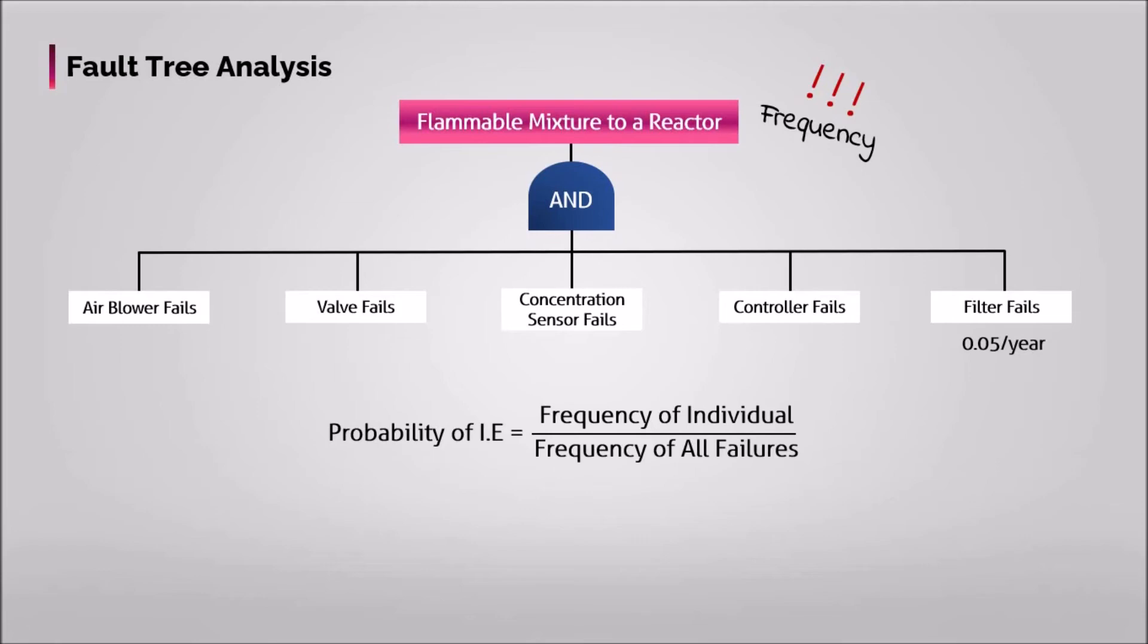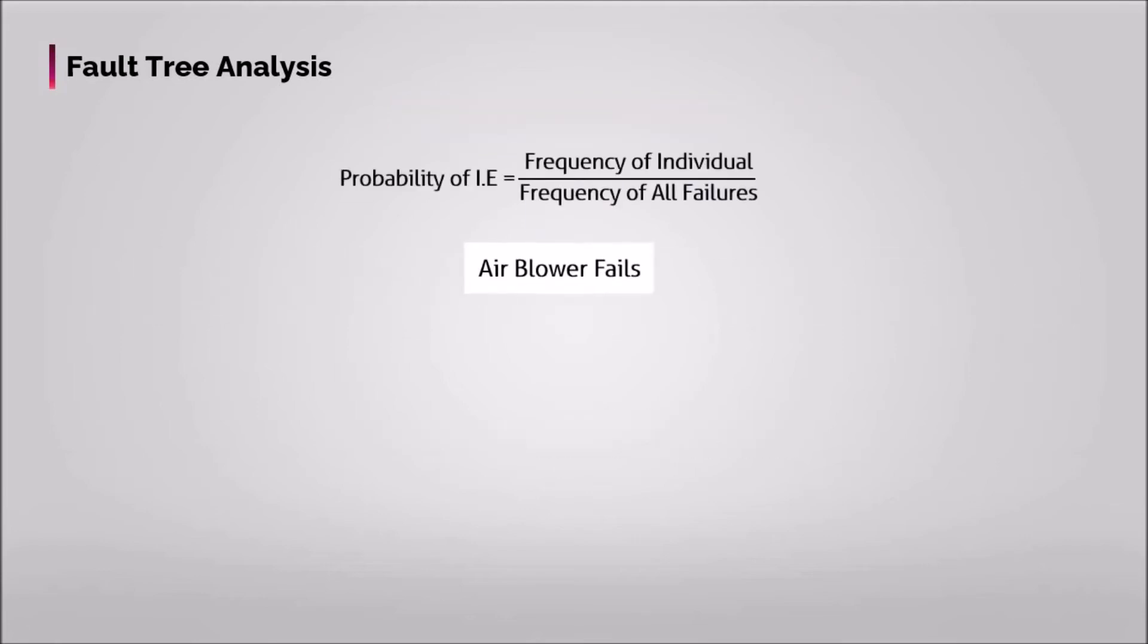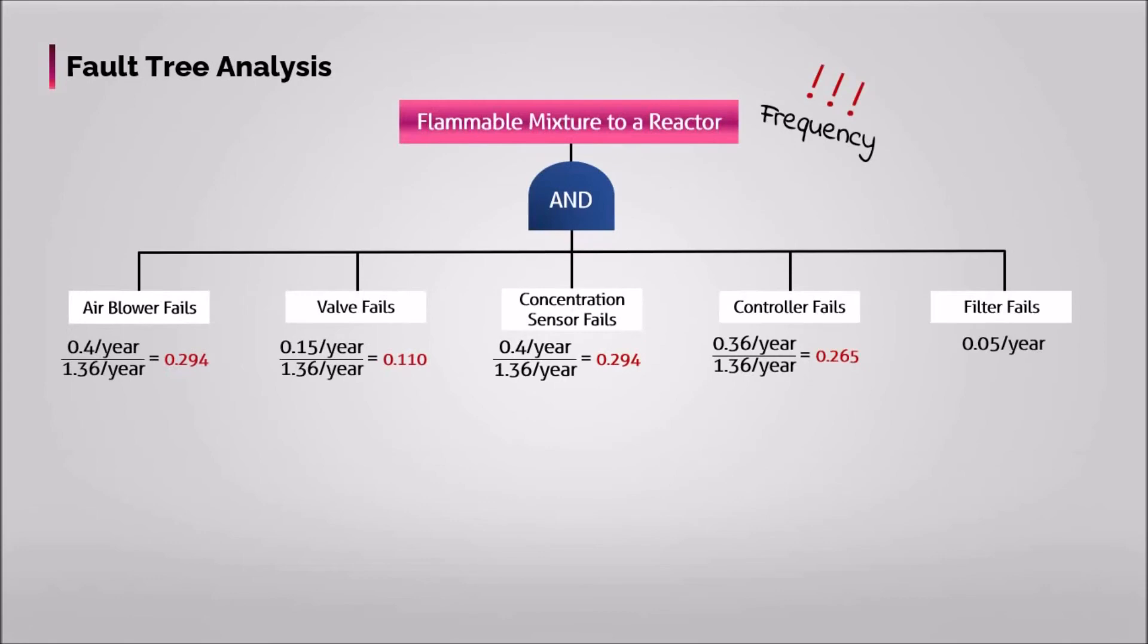Let's use this formulation to find the probability of air blower fails. The frequency of air blower failures divided by the total frequency of all provided failures. And employing the same formula for other failures, we can easily determine the probabilities of other failures.